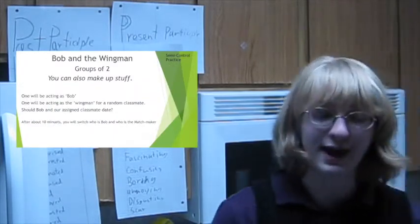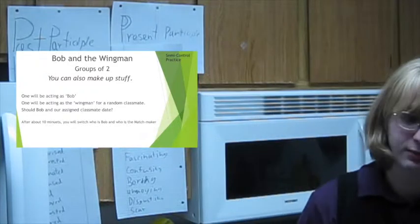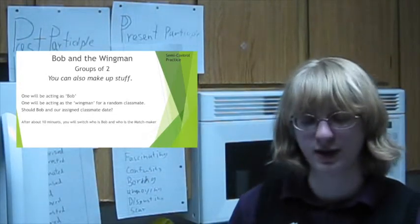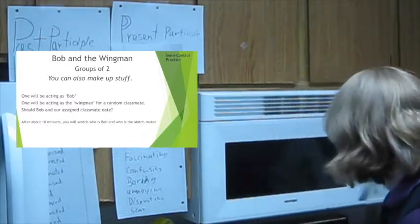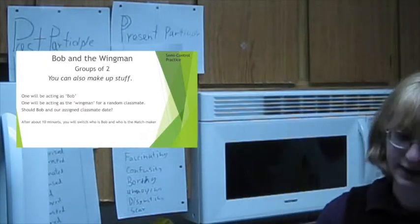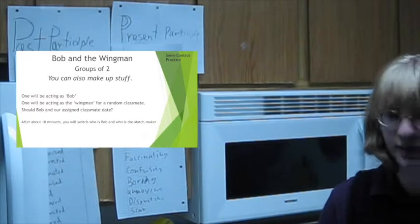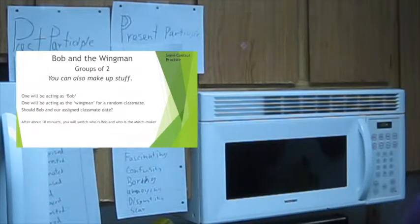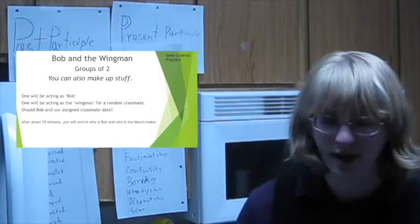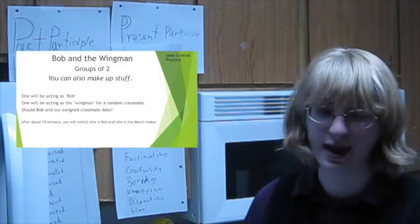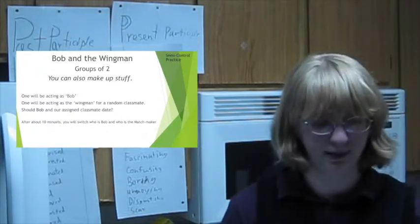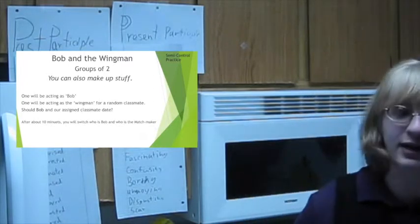So now we're going to do a new activity. I call this activity Bob and the Wingman. For this activity, you can make stuff up, or you can read stuff based off of the questionnaires we got, or these other pieces of paper, which are describing Bob. You can read stuff off of this, or make it up. Can I have a volunteer? So one of us will be acting as Bob, and the other will be acting as the Wingman. Can you do me a favor, and can they be Bob? I will be being the Wingman to help this classmate end up with Bob. I'm going to be the matchmaker between the two.